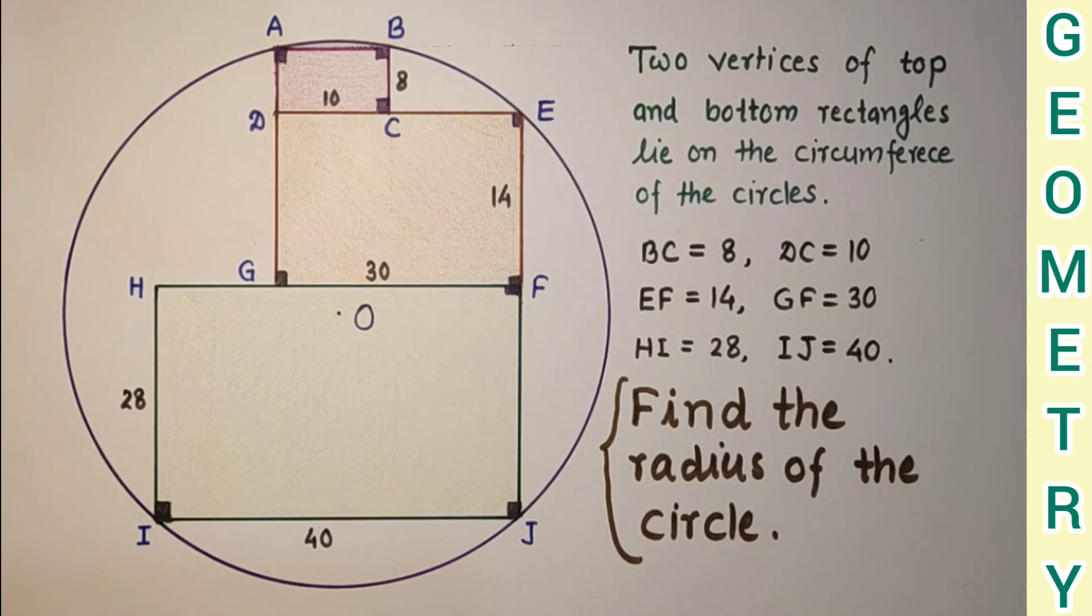To solve this question, if we extend this AG up to, let us suppose this point is P, extend AG up to P where P lies on the circumference.